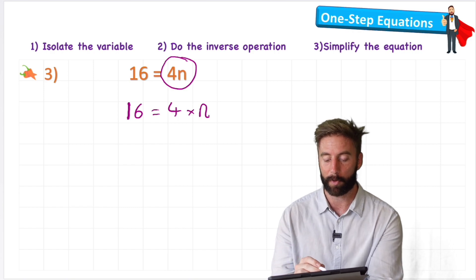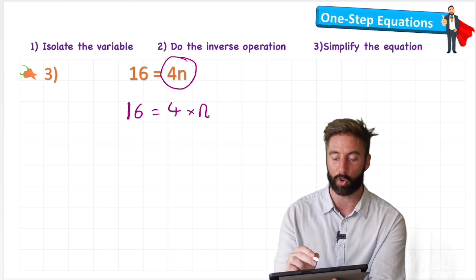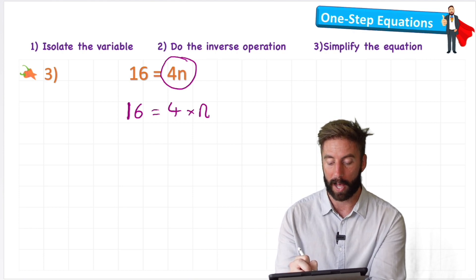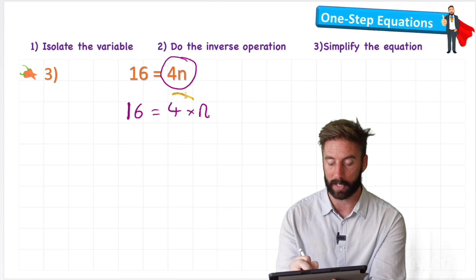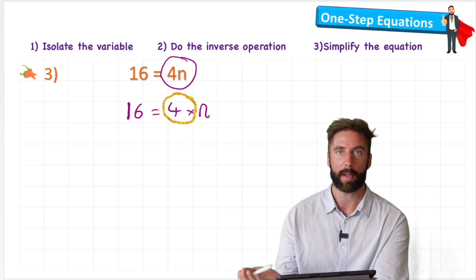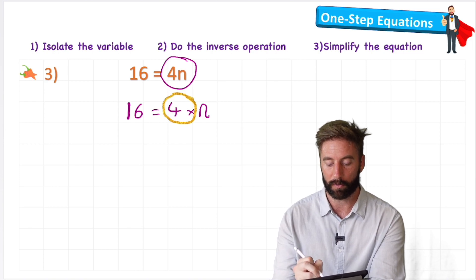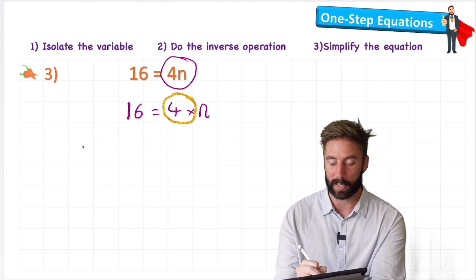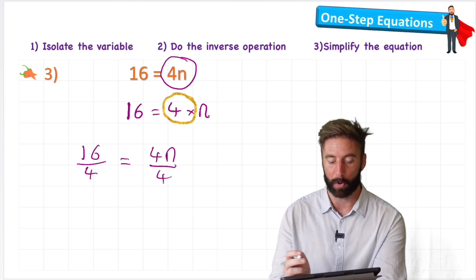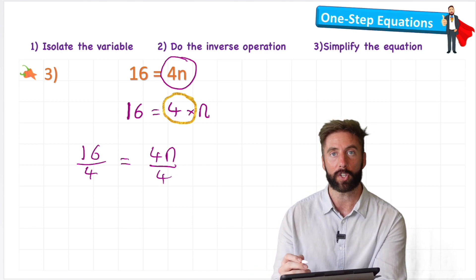So I'm trying to isolate the variable by doing the inverse operation or cancelling out what's connected to my variable. And now the connection to my variable is this 4 times. Okay, so what's the opposite to times? That's right, division. So I'm going to use division now. And I'm going to write 16 divided by 4 equals 4n over 4. So I added a divide 4 on both sides. What does that do to my equation?